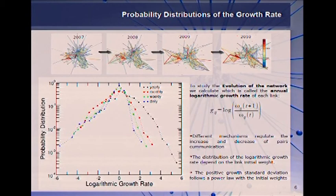So there are different mechanisms regulating the increase and the decrease of the communication and also I would like to notice that the positive, I mean the right standard deviation depends on the weight and we find that this dependency is as a power law - the deviation depends as a power law with the initial weight.